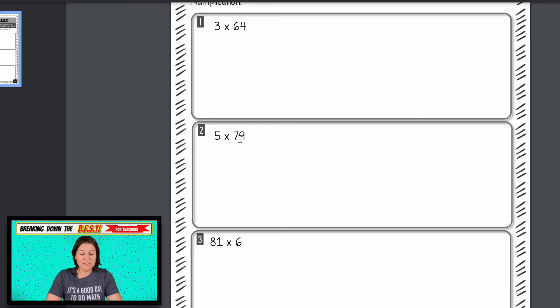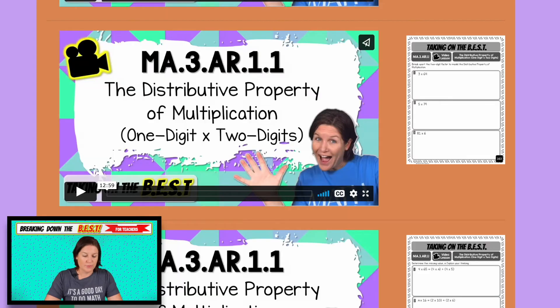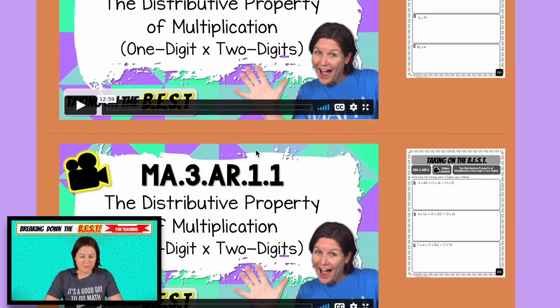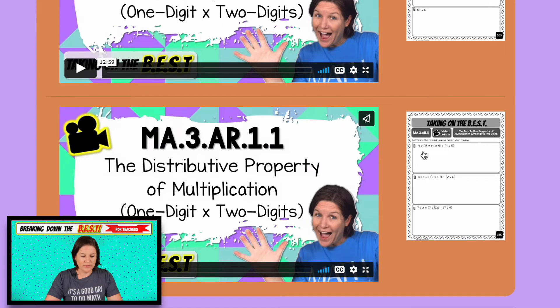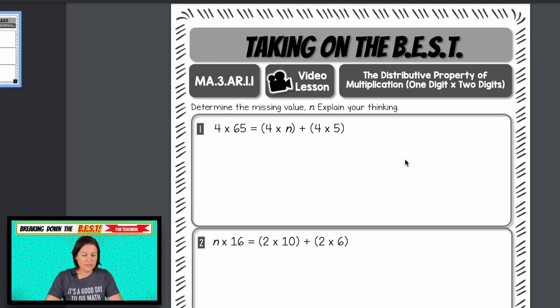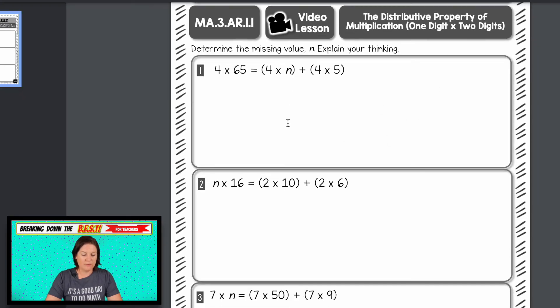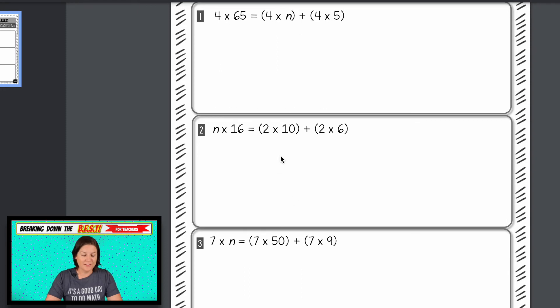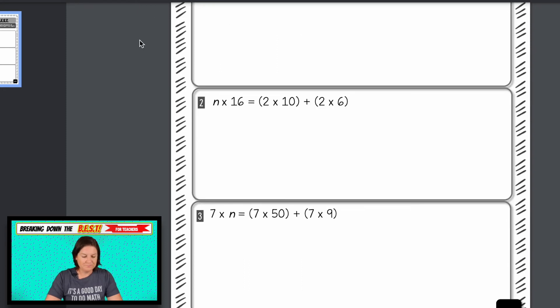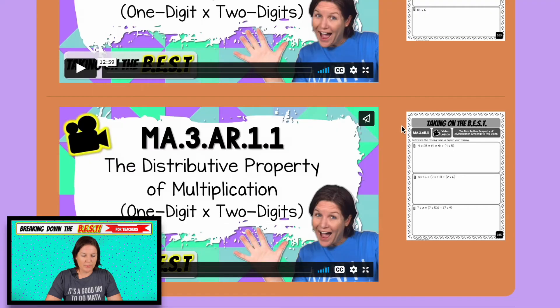Then we have the distributive property of multiplication, one digit times two digits. So here we go practicing the three times 64, breaking apart the two digit factor to model the distributive property of multiplication. And here you can see it's 81 times six. They might be used to seeing it with the one digit first, but according to the commutative property of multiplication, it doesn't matter the order. We could change it around if it helps us to see it better. So that's cool.